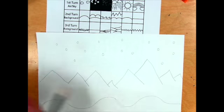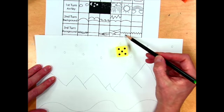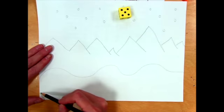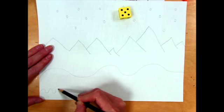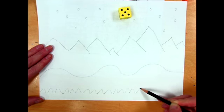My third turn, I'm going to do the foreground. It's the very bottom. I got five—pretty squiggly. That'll be my greenest grass right there.